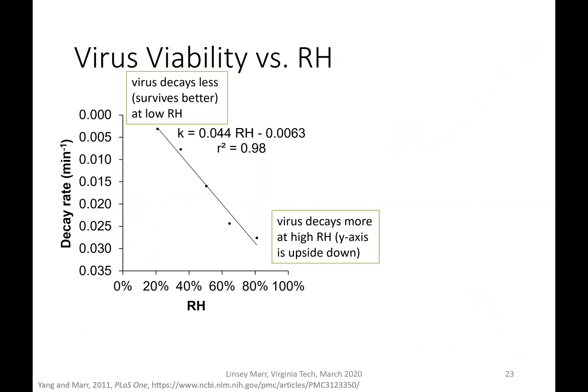We can look at that relationship here — virus viability versus relative humidity. I should note that this is for one set of experiments with a certain strain of flu virus in a certain type of liquid, and the results can vary depending on the exact virus and liquid type. This figure shows the decay rate of the virus as a function of relative humidity. The y-axis is actually upside down, so I'm showing better survival at the top. At low relative humidity around 20 percent, the virus decays less — the decay rate is closer to zero. At 80 percent relative humidity, the decay rate is maybe around 0.028 per minute. The virus decays more at higher relative humidity, and there may be more of a U-shaped relationship in reality.